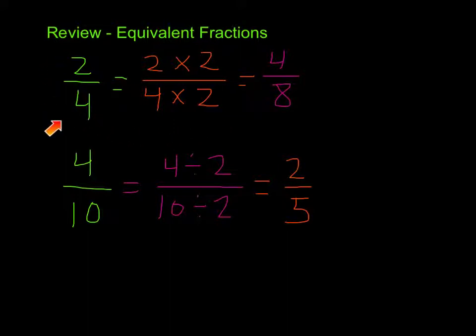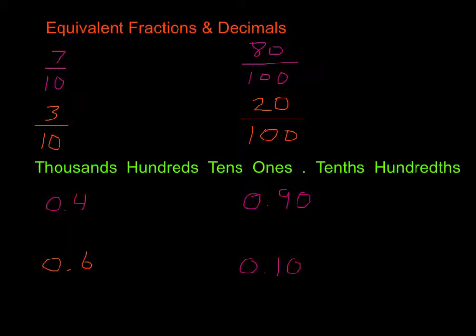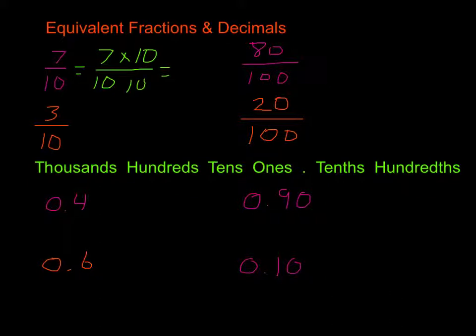This comes in handy when we're trying to find equivalent fractions or equivalent decimals. Here we're going to take these fractions and create equivalent fractions in either tenths or hundredths. Our first one is 7 tenths. We are going to multiply our 7 tenths by 10 over 10, and that is going to give us our hundredths — 7 times 10 is 70, and 10 times 10 is 100.